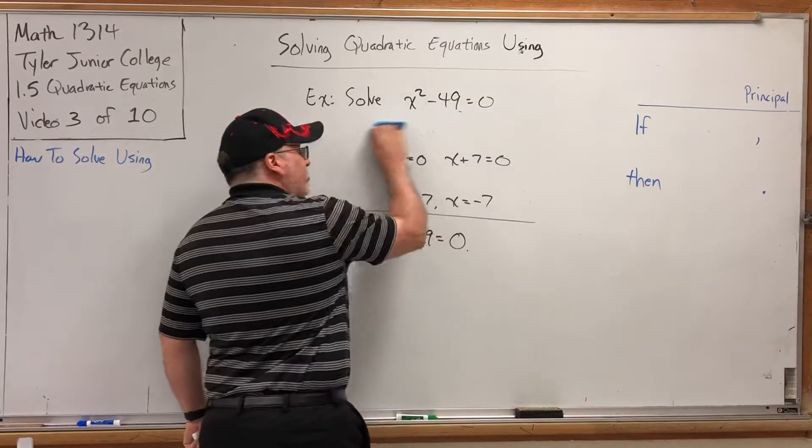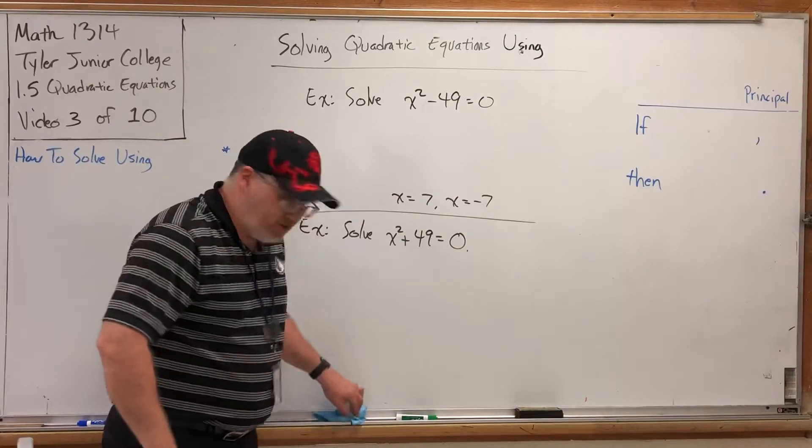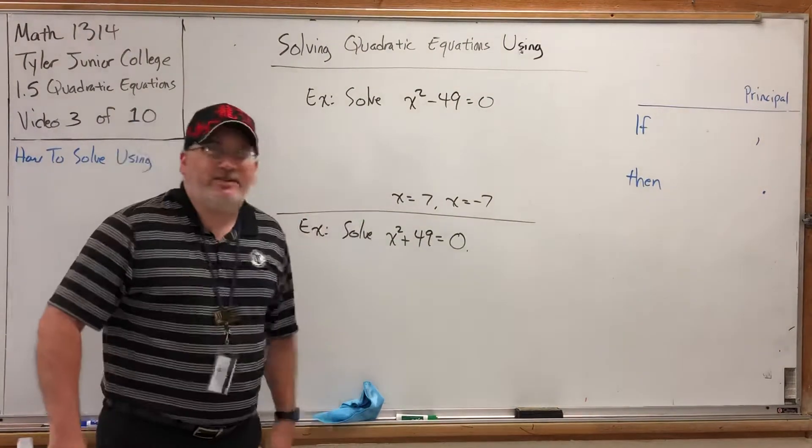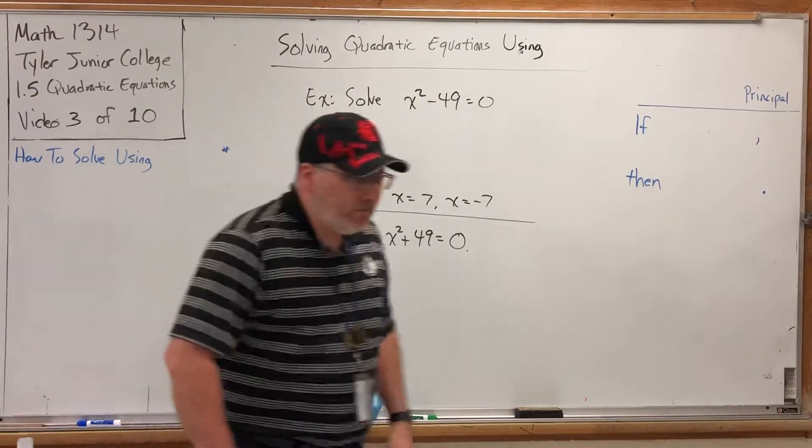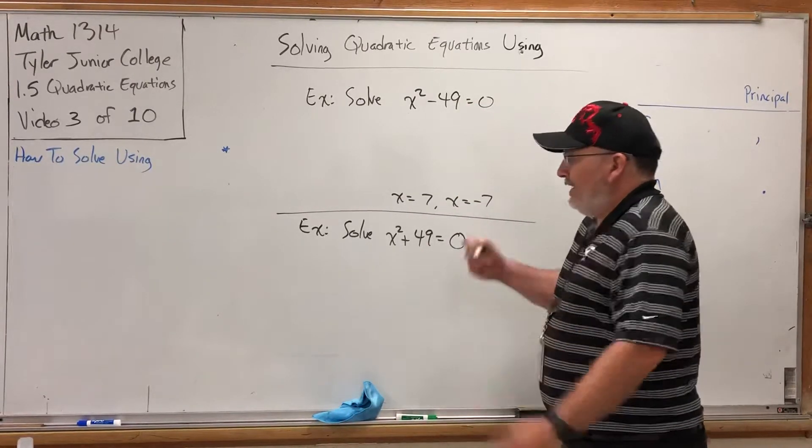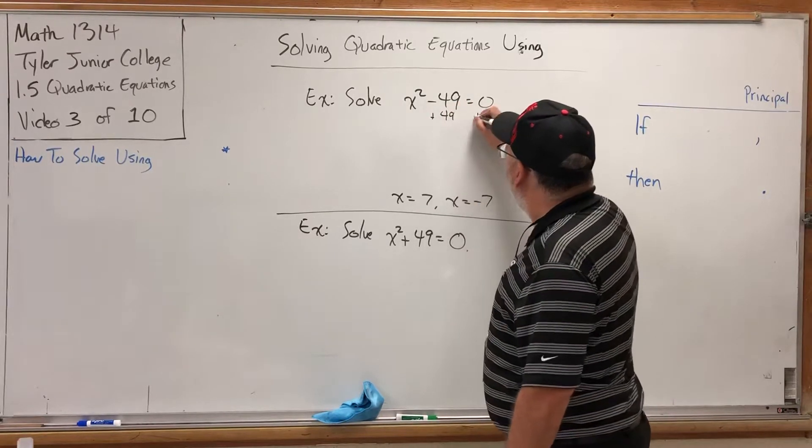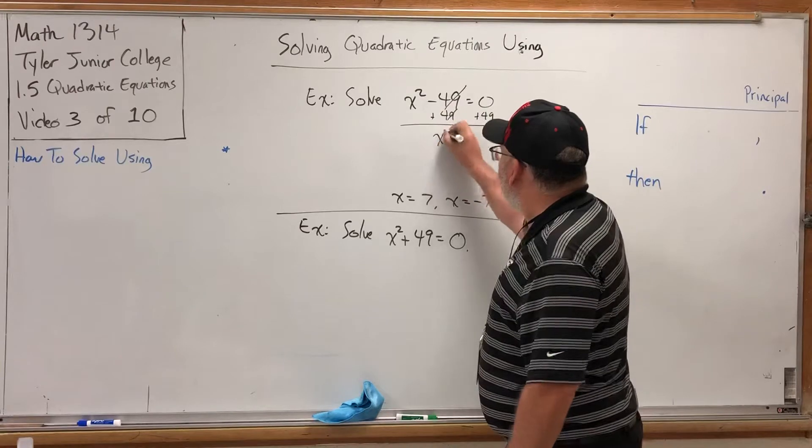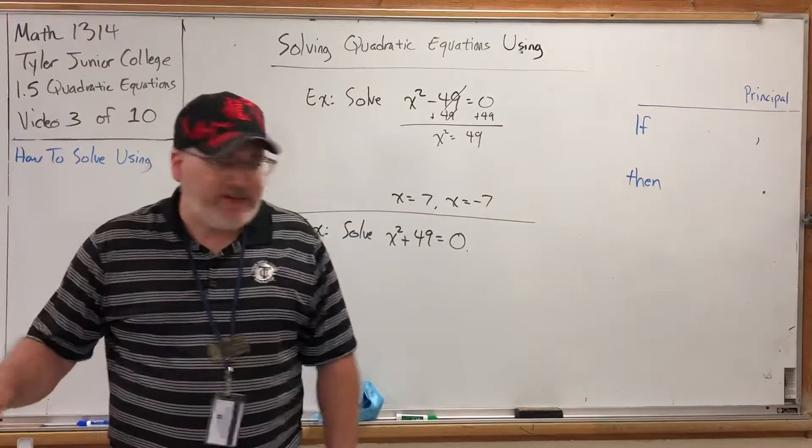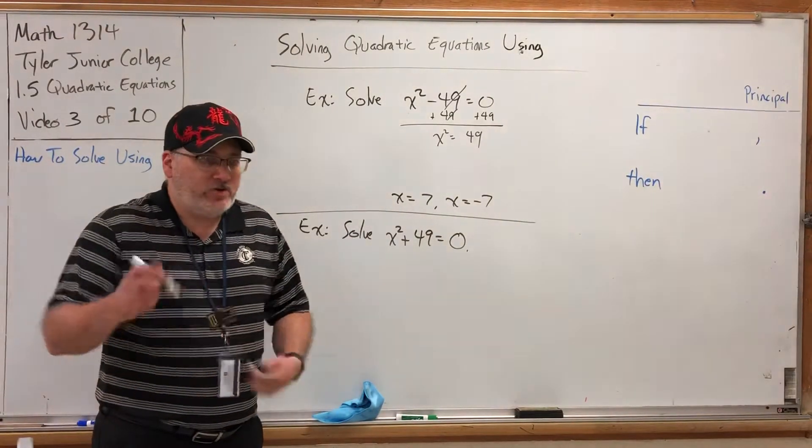You may already know this technique, because you should know what the essence of solving an equation is. It's goal-oriented, and what's the goal? Loosely speaking, the goal is to get the x by itself, figure out what it equals. So, if I want to get this x by itself, can't I start by adding 49 to both sides and get x² = 49? That gets me closer to my objective of getting the x by itself, except I still have the square on it. So, what can I do to get rid of the square?